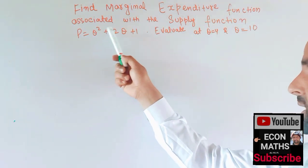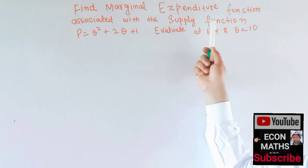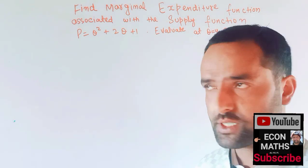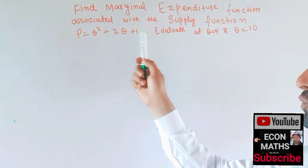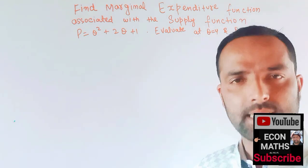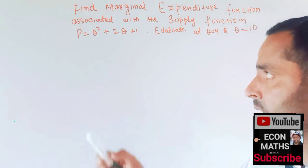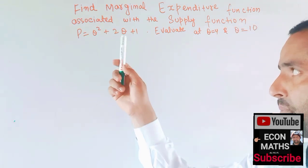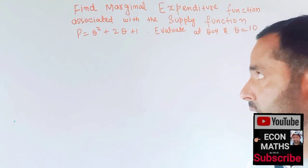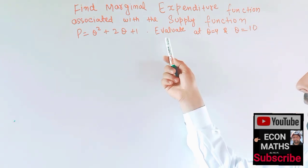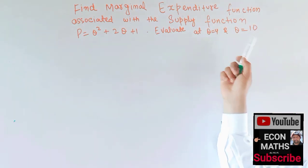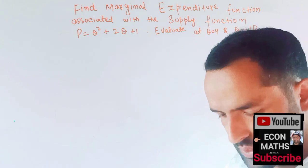Find the marginal expenditure function associated with the supply function. We are given a supply function: p = q² + 2q + 1, where p is the price and q denotes the quantity. We have to evaluate at q = 4 and q = 10.